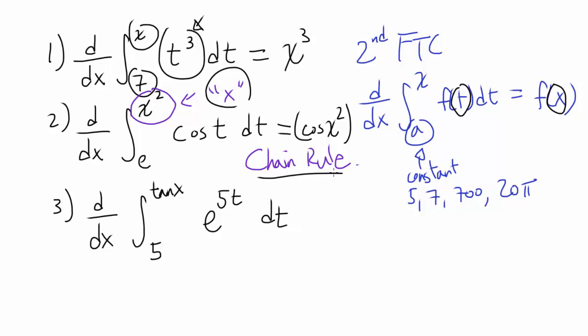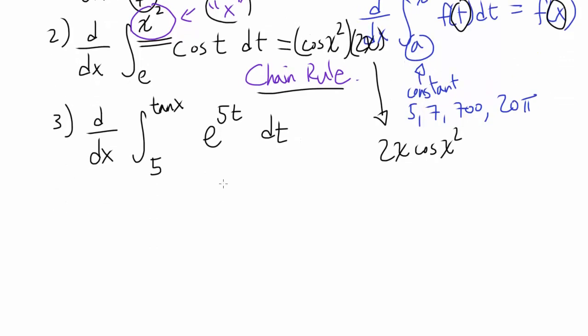And by chain rule, we have to multiply by the derivative of what we just pretended to be x. So we're going to differentiate x squared now and multiply by that. Differentiating x squared, we get 2x. So our answer is 2x times cosine of x squared. Now let's go to the last one.